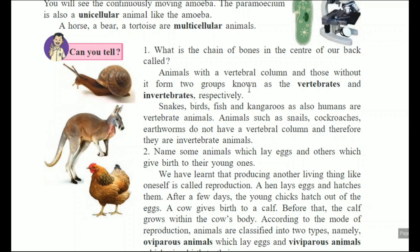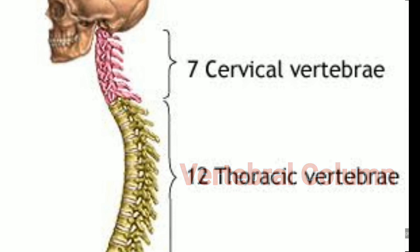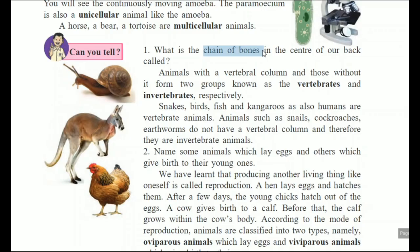The next criteria is the vertebral column. Animals with a vertebral column and those without it form two groups. If you touch the center of your back, you will find a chain of bony structure — that is the vertebral column, a very important part of our body. If the vertebral column is present, those animals are called vertebrates.